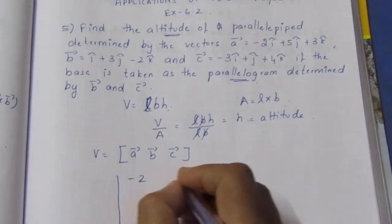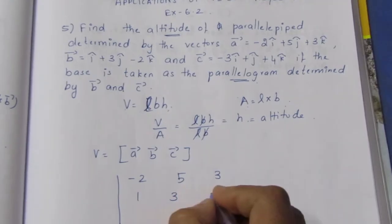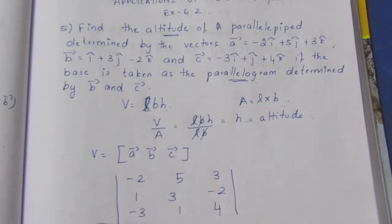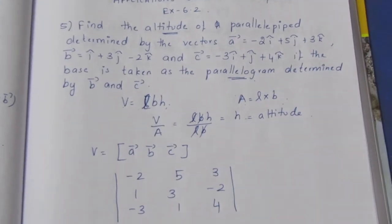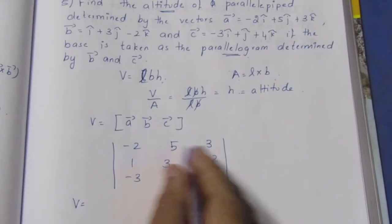The determinant is: -2, 5, 3 in the first row; 1, 3, -2 in the second row; -3, 1, 4 in the third row. This determinant gives us the volume.